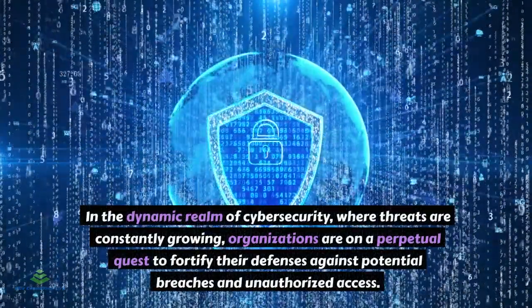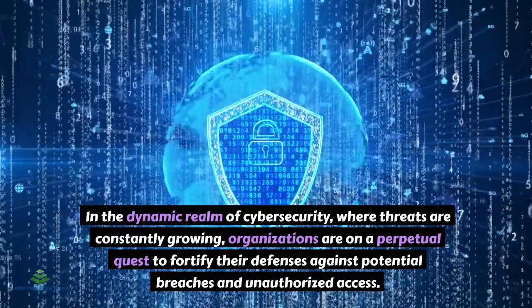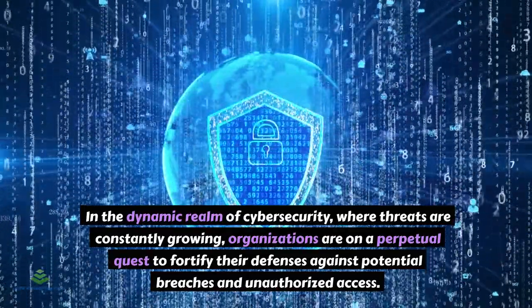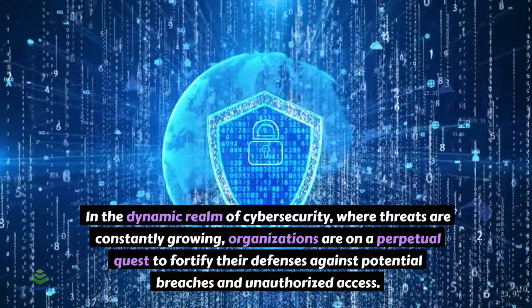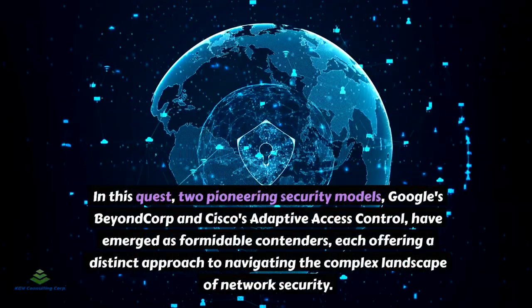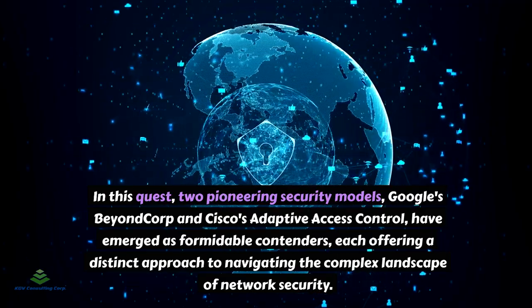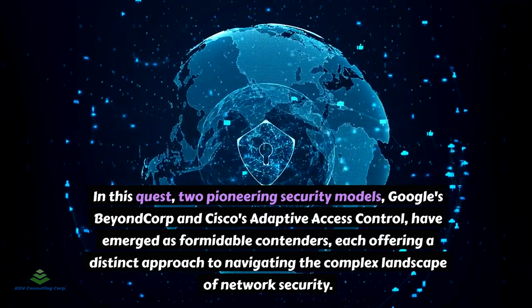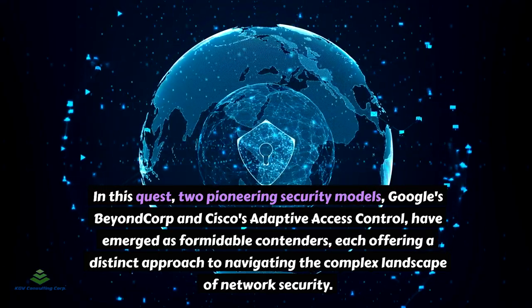In the dynamic realm of cybersecurity, where threats are constantly growing, organizations are on a perpetual quest to fortify their defenses against potential breaches and unauthorized access. In this quest, two pioneering security models — Google's BeyondCorp and Cisco's Adaptive Access Control — have emerged as formidable contenders, each offering a distinct approach to navigating the complex landscape of network security.